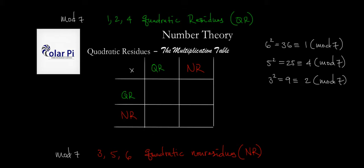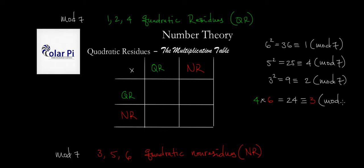So working in mod 7, let's color code and take the residue 4 and multiply it with the non-residue 6. Then the product, which is 24, is congruent to 3 mod 7. So 24 is congruent to 3 mod 7. And therefore this suggests — and it's in general true — that a residue times a non-residue is going to be a non-residue. So that means that our table is going to show a non-residue here, and also a non-residue here.